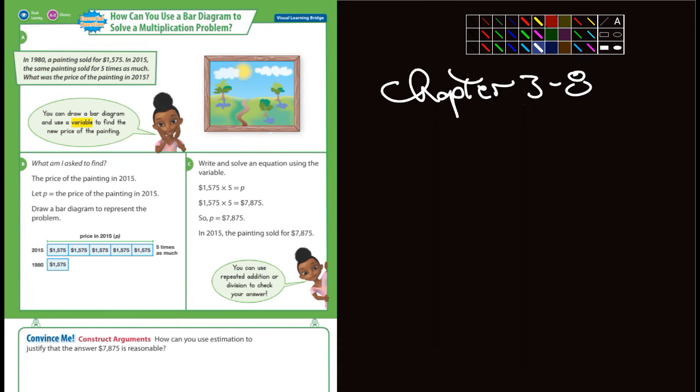And this is all about solving word problems. So let's look at the example they give us here. It says in 1980, a painting sold for $1,575. In 2015, the same painting sold for five times as much. What was the price of the painting in 2015?